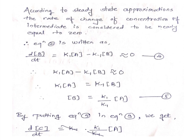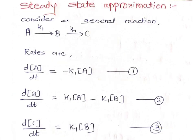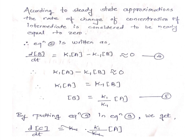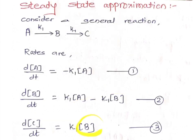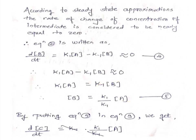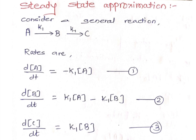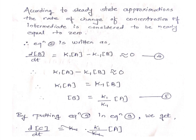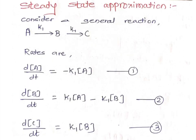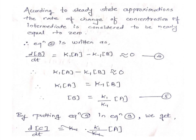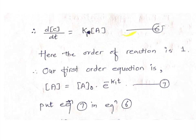Now we substitute equation 5 into equation 3 to find the rate of change of concentration of the product. Equation 3 is dC/dt equals K-1 times concentration of B. Substituting the value of [B]: dC/dt equals K-1 times K1 divided by K-1 times concentration of A. K-1 and K-1 cancel out, leaving dC/dt equals K1 times concentration of A. This is equation number 6.